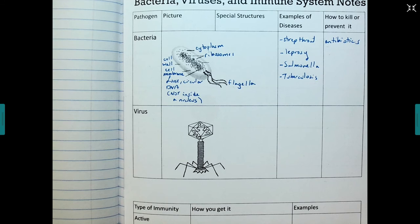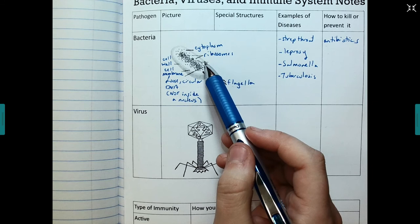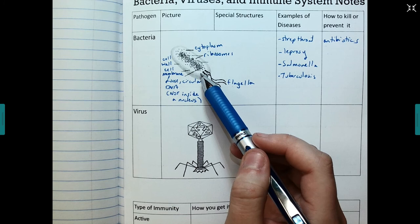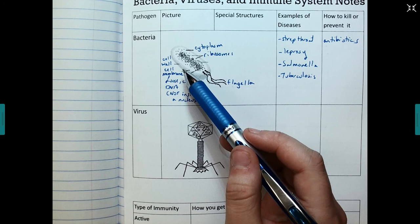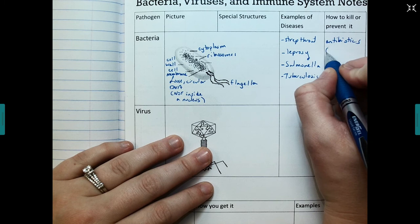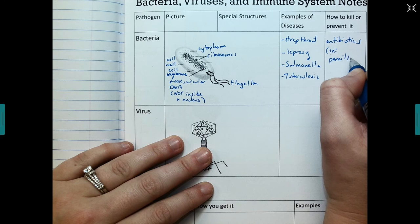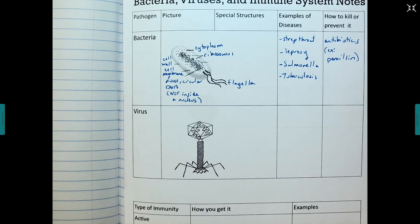So I could take penicillin, and basically that penicillin, that antibiotic would go in, and it would disrupt the structures of the bacteria. Maybe it breaks through the cell membrane so that it can no longer maintain homeostasis. So I'm just going to write an example of an antibiotic, which is penicillin. And if I write it, you write it. Because if I'm taking time to write it, it's probably important. So penicillin.